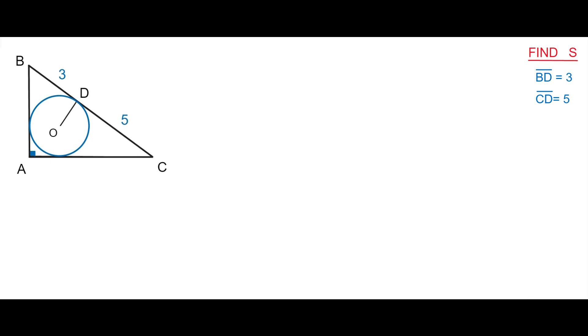In order to find the area of a right triangle, we need to connect the center of the inscribed circle to the vertices B and C and also the points of tangency on the legs. Let's label some letters. Let also R denote the radius of the inscribed circle.